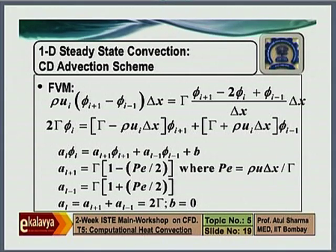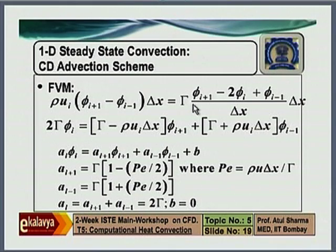And what is gamma in this equation — is it only k or k by Cp? Gamma. Cp on the left hand side. Yeah, you are right. Gamma: if it is a heat transfer problem, it will be k divided by Cp. And for momentum it should be mu. Yes, thank you, sir.